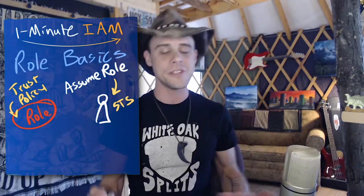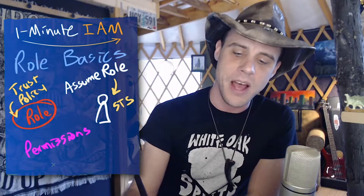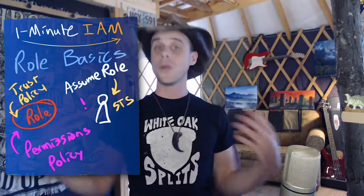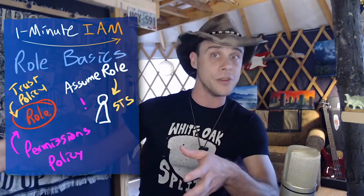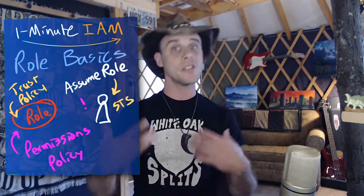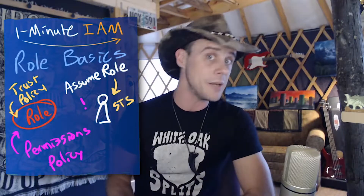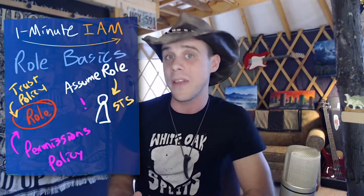Once you have the role successfully assumed, that's where the second big policy kicks in — the permissions policy. This is the policy that grants some permissions to our user or service. Generally, you would write a small least-permission policy for the user or service, and then have them assume the role when they need to elevate their privileges. For many AWS services, there isn't any elevating of privileges — they only have the permissions that you grant them in the role.